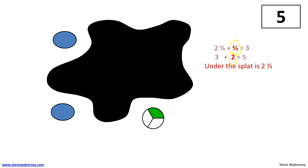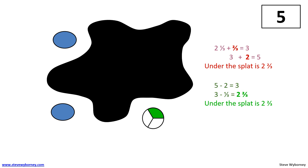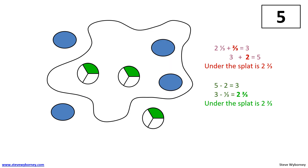Or maybe you thought about it a different way. We can also think of this problem as subtraction. I know that my total is five and I need to take away two and a third to find out what's under the splat. I can do that in parts. Five take away the two wholes is three. Three take away one-third is two and two-thirds. Under the splat is two and two-thirds.